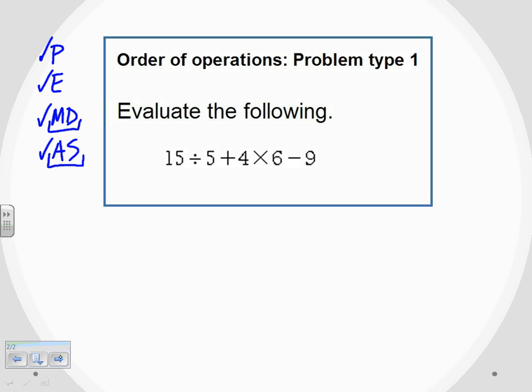So in this problem, I do not have any of the top two. I do not have any parentheses, and I do not have any exponents. So I really start off right here as my first order of operation. It is going to be multiplication and division. But keep in mind, this does not say multiplication and then division. It says multiplication and division get done at the same time. And in this problem, I have division and I have multiplication.